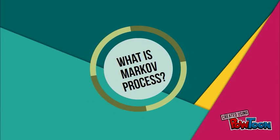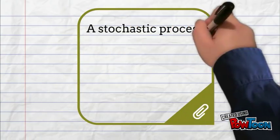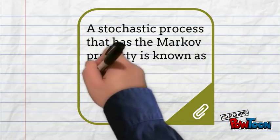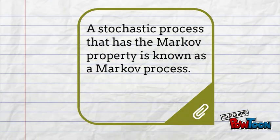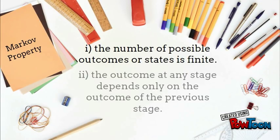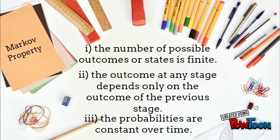What is a Markov process? A stochastic process that has the Markov property is known as a Markov process. Markov property: first, the number of possible outcomes or states is finite; second, the outcome at any stage depends only on the outcome of the previous stage; third, the probabilities are constant over time.